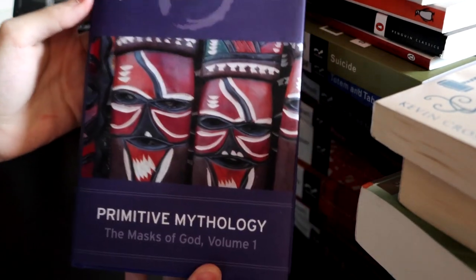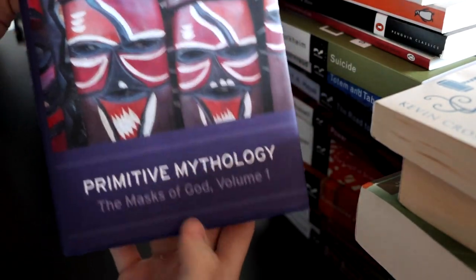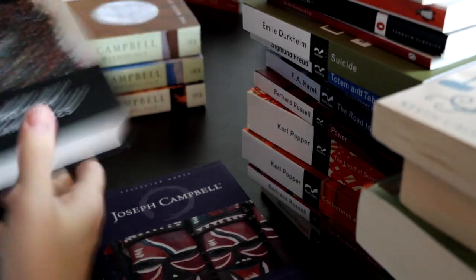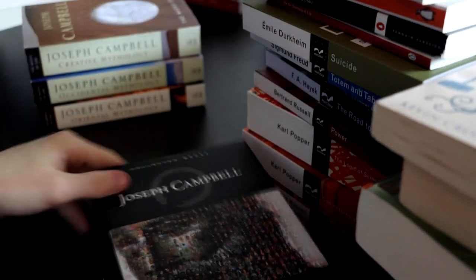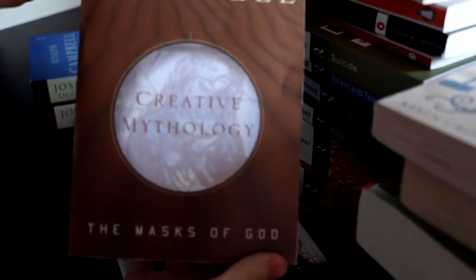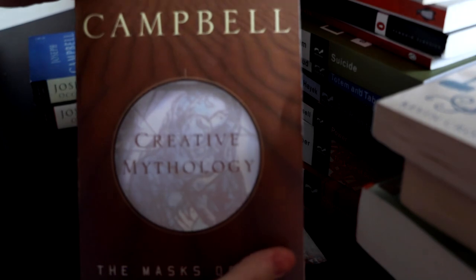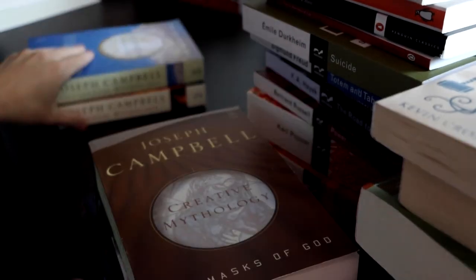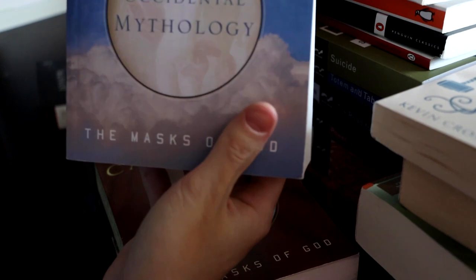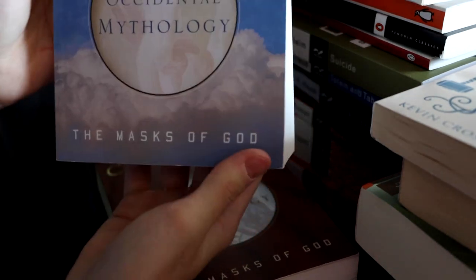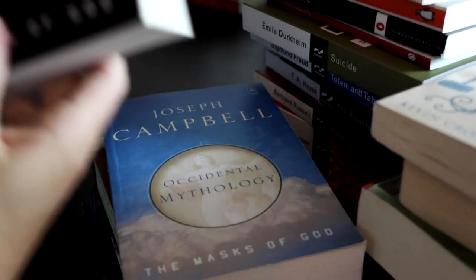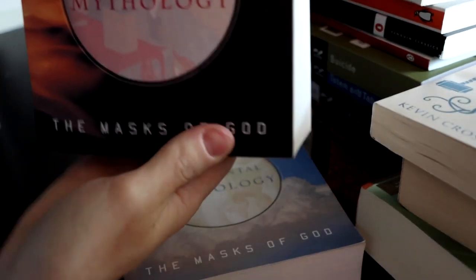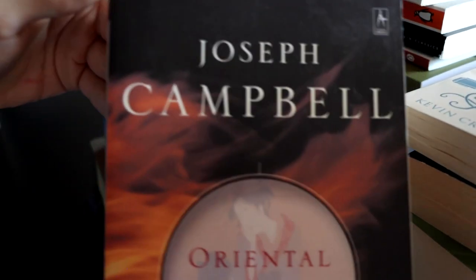Joseph Campbell, Primitive Mythology, The Masks of God, Volume 1. The Hero with a Thousand Faces. Also Joseph Campbell. Joseph Campbell, The Masks of God. This is Creative Mythology. Yeah, Creative Mythology. Joseph Campbell, Occidental Mythology, The Masks of God series. And then lastly, Joseph Campbell, Oriental Mythology, The Masks of God.